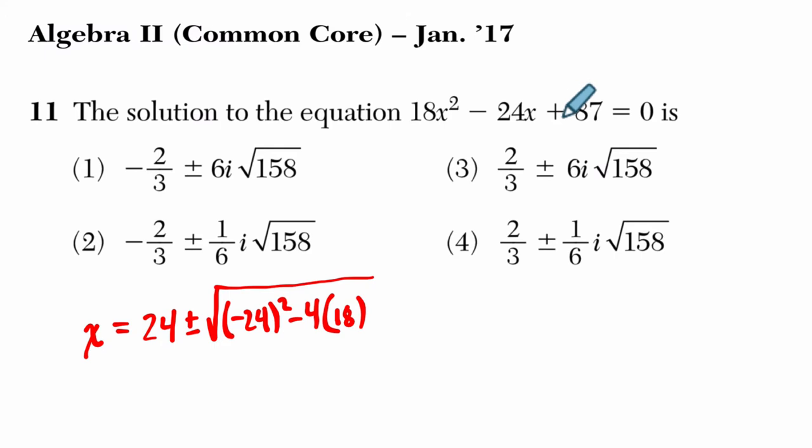times c, 87, all over 2 times a, which is 18.